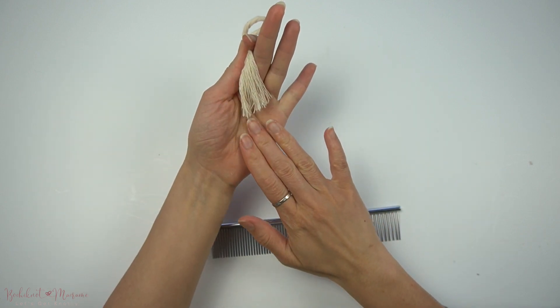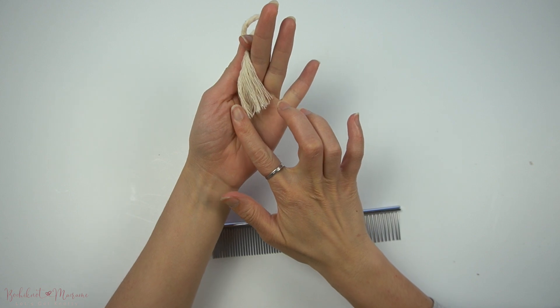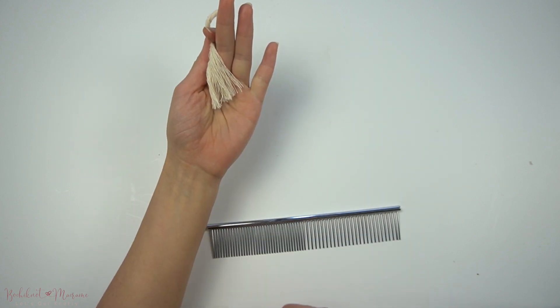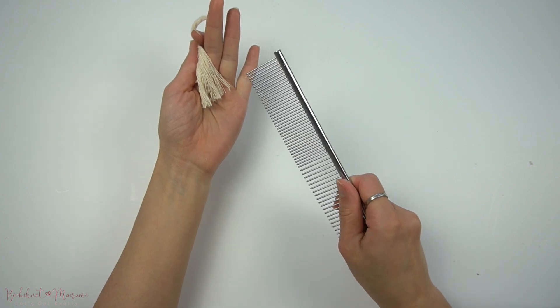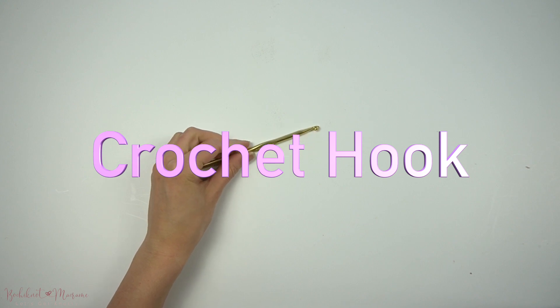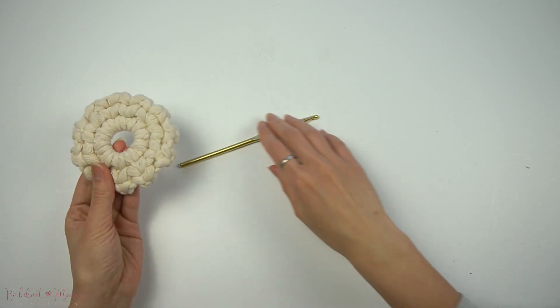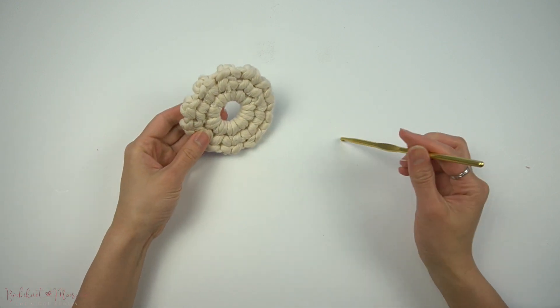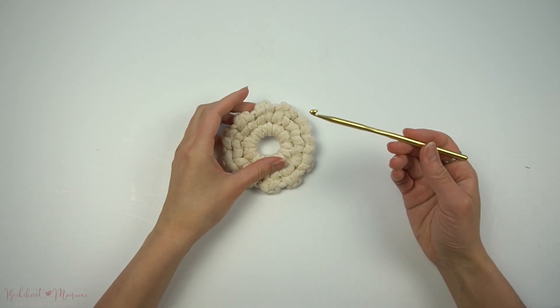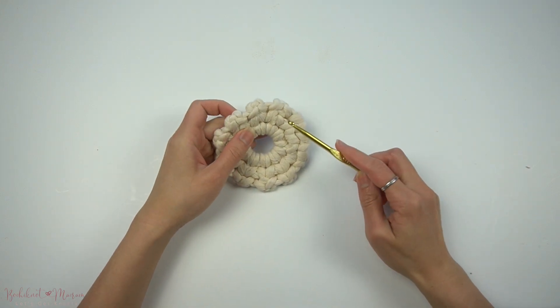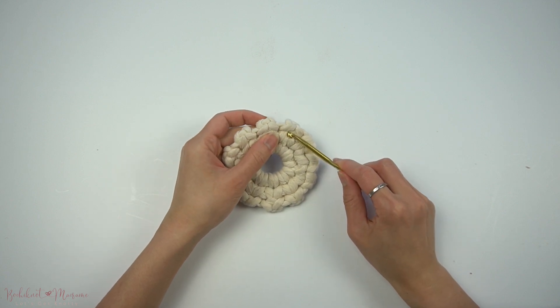A helpful tool to have for macramé is a crochet hook. So oftentimes we have to tuck in loose cord ends through the back of a macramé wall hanging or through this coaster that I've made before, and to do that it really helps to have a crochet hook to tuck those cord ends through the knots.